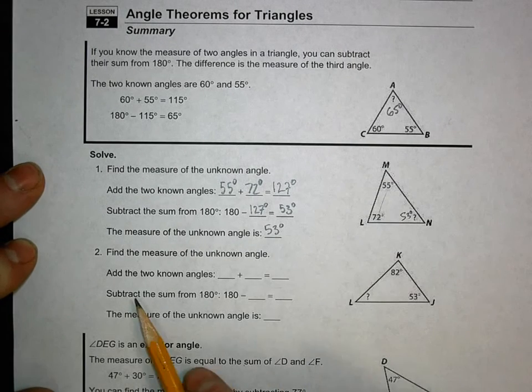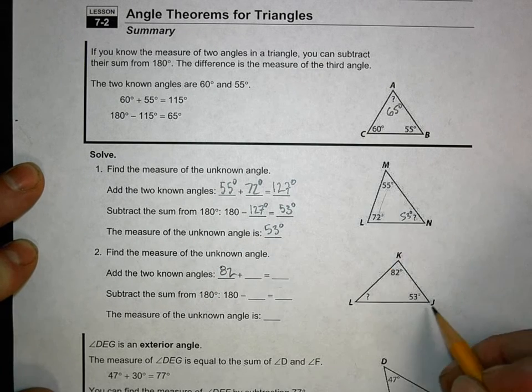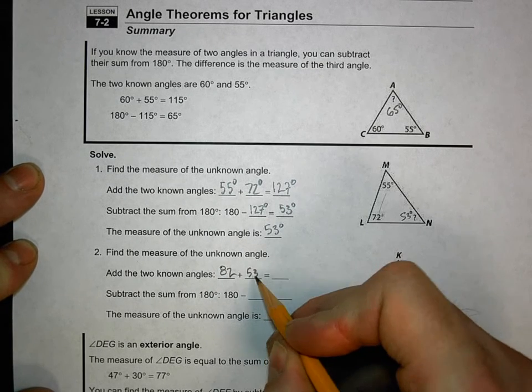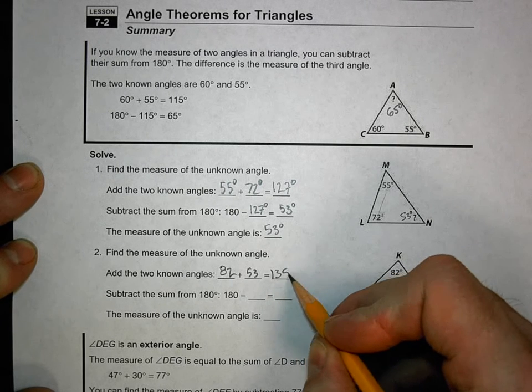So here we've got another one. Find the unknown angle. We've got the known angles. The first one is 82 degrees. The second one is 53 degrees. We add them together. We get 135 degrees.